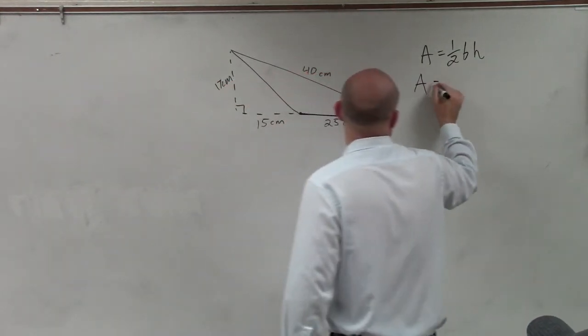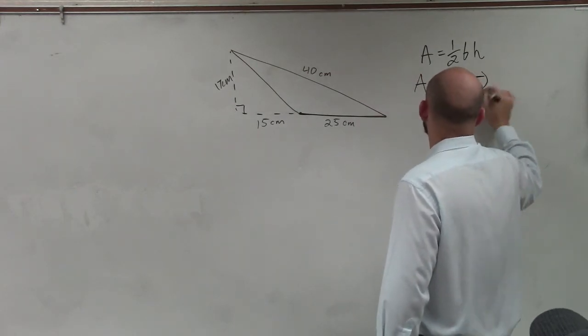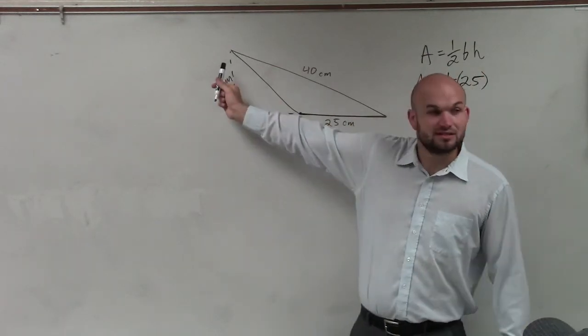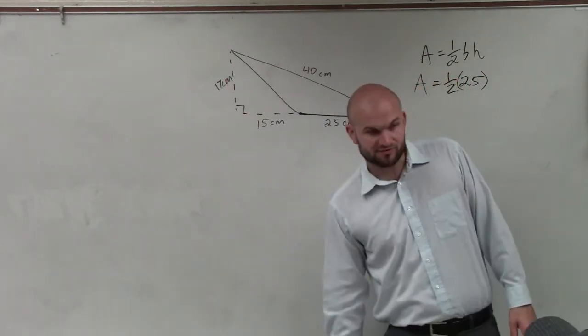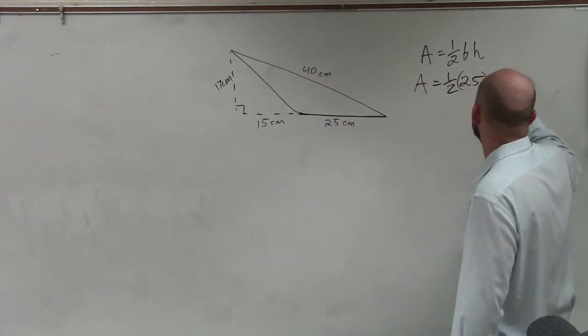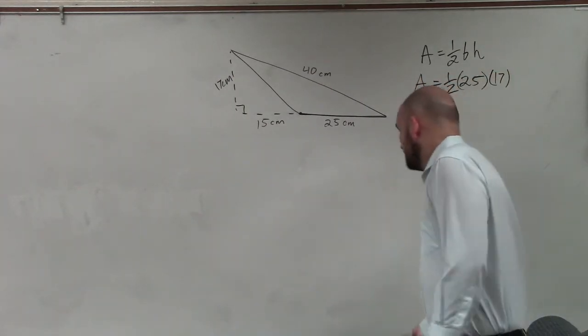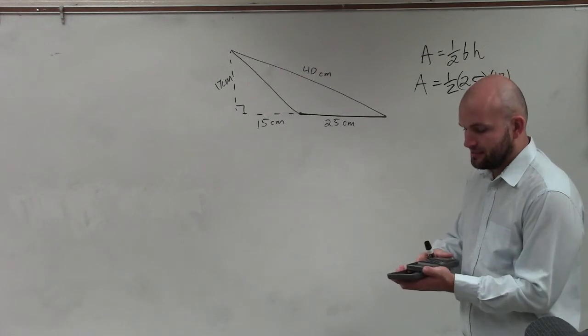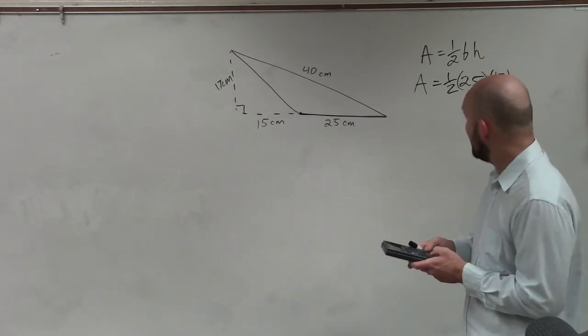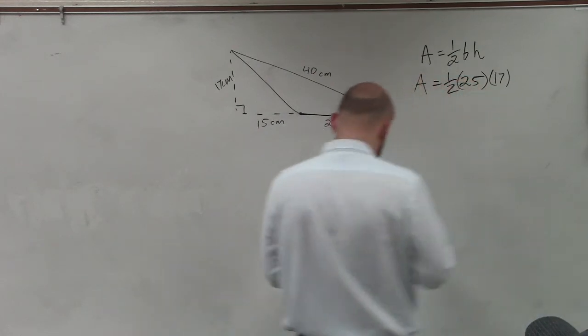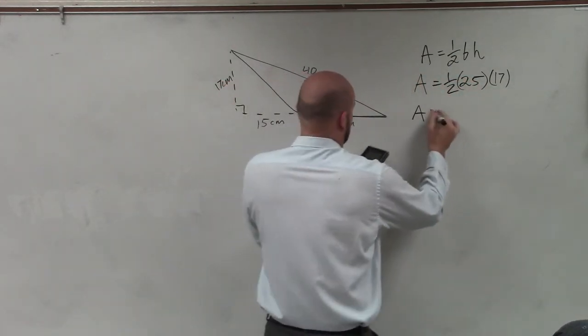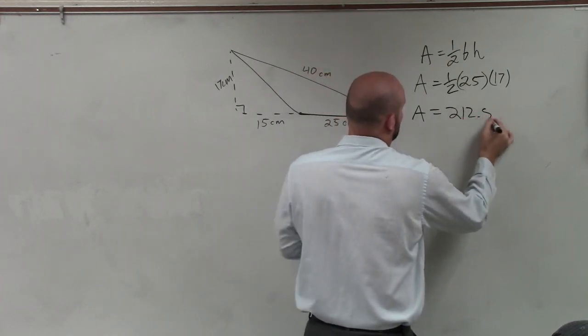So let's say area equals one half, 25, and then the height, if you guys remember this, 40 tells us the slant. The height is always from directly to the base to the top, which would be 17. So then I'll just take my calculator, and I'll just do 0.5 times 25 times 17, and I get area equals 212.5.